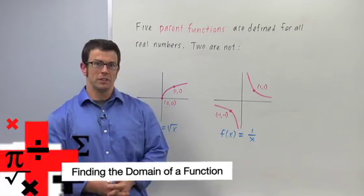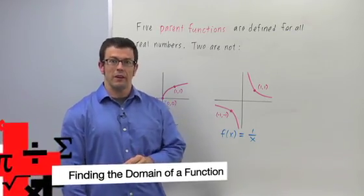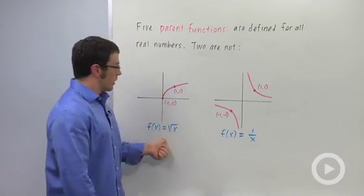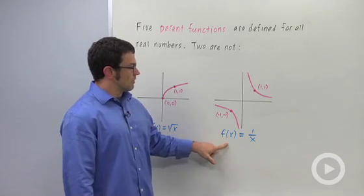Of our seven parent functions, two of them aren't defined for all real numbers. They are the square root function and the reciprocal function.